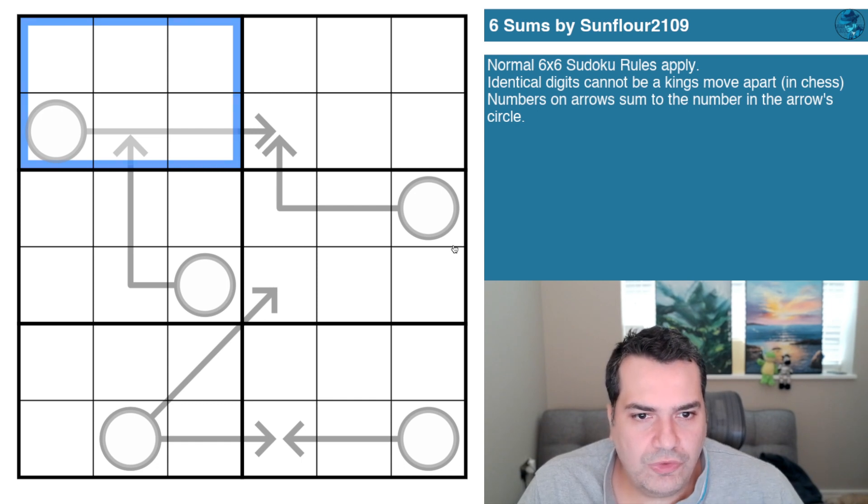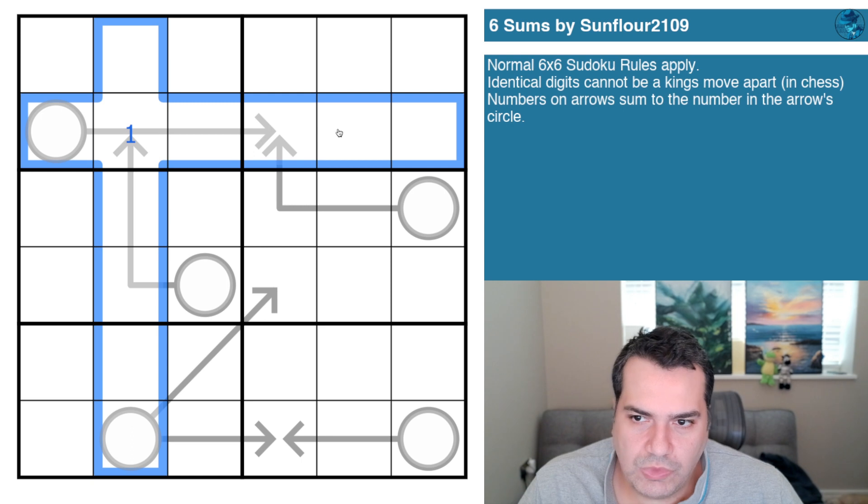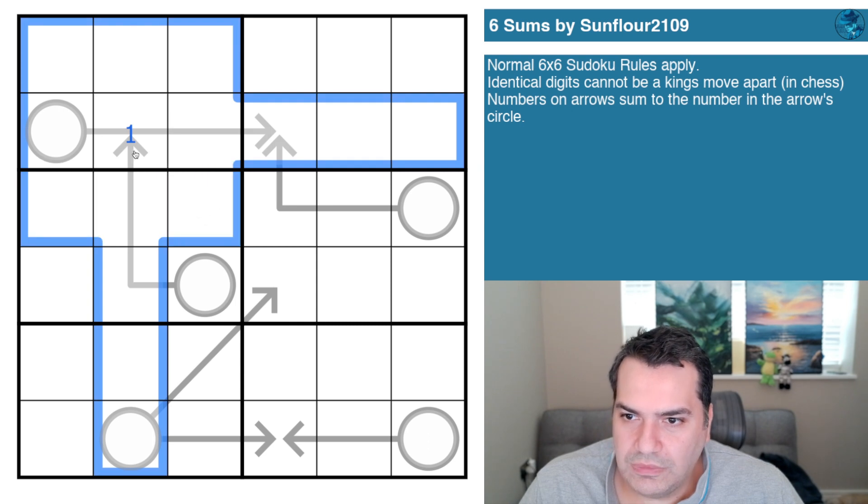Now identical digits cannot be a king's move apart in chess, so if for example this is a one, not only are none of these ones because they're in the same column, not only are none of these ones because they're in the same row, not only are none of these one because they're in the same box, these two as well which are king's move apart even though they're in different columns, different rows, different boxes, none of these can be one either.